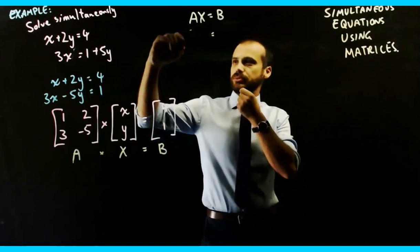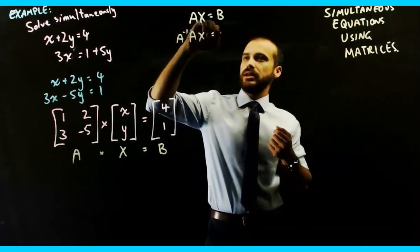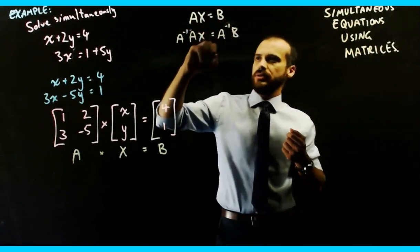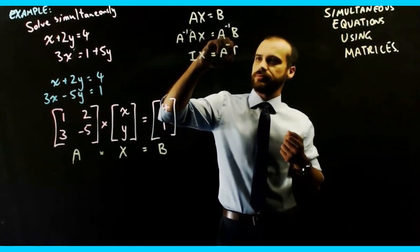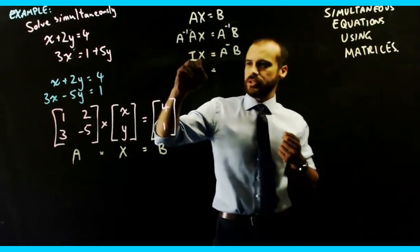So in this case, we do some pre-multiplying. We say that A to the negative 1, Ax, equals A to the negative 1, inverse A, B. That's going to be the identity matrix of x. And then the identity matrix times x is just going to be x.